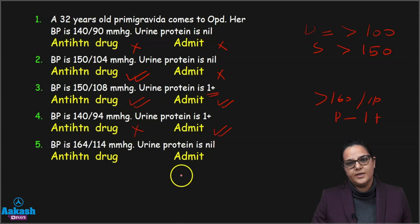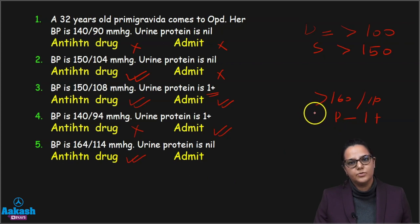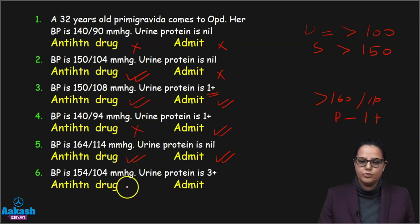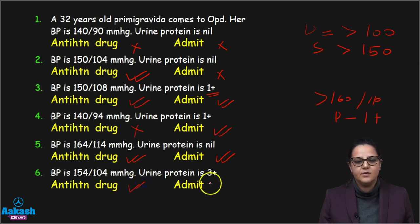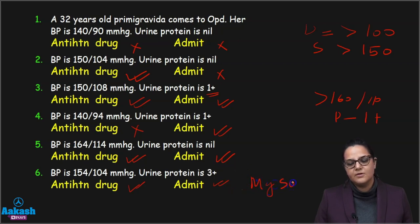Case 5: BP 160/114, urine protein nil. We start antihypertensives and we definitely admit this patient because the BP is more than 160/110. Case 6: BP 154/104, urine protein 3+. Diastolic is more than 100 and systolic is more than 150 — definitely start antihypertensives. We admit her because urine protein is more than 1+, and since it is a sign of impending eclampsia we start magnesium sulfate.